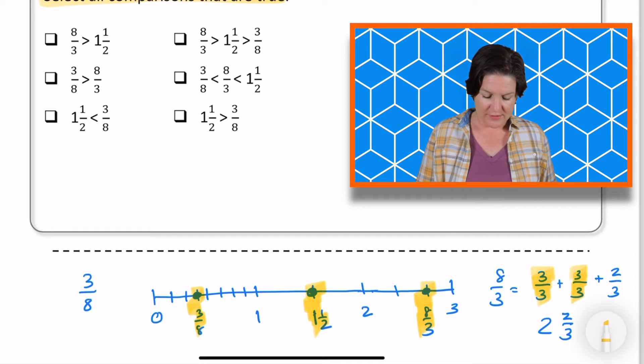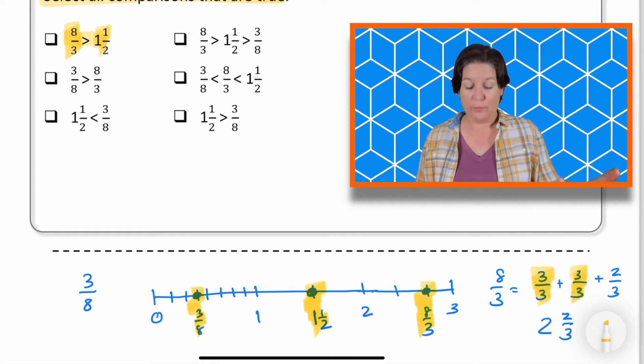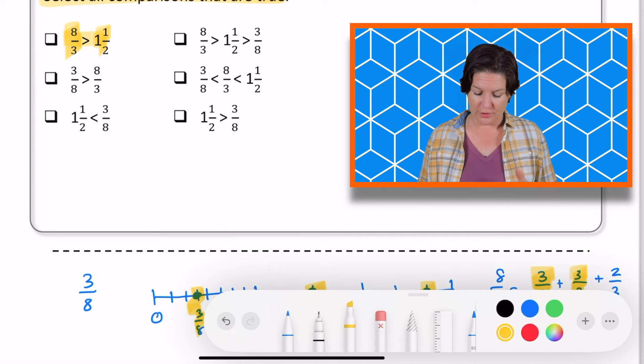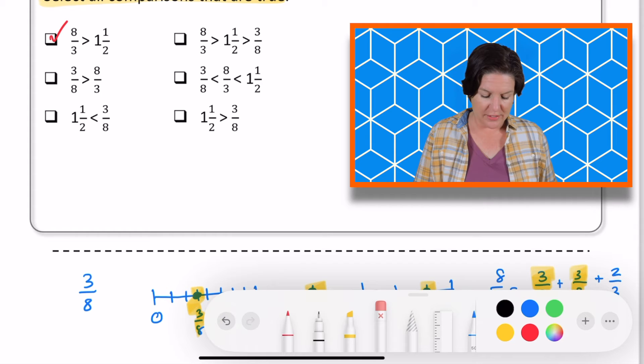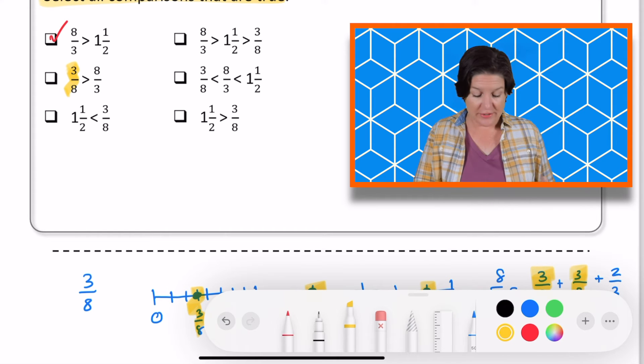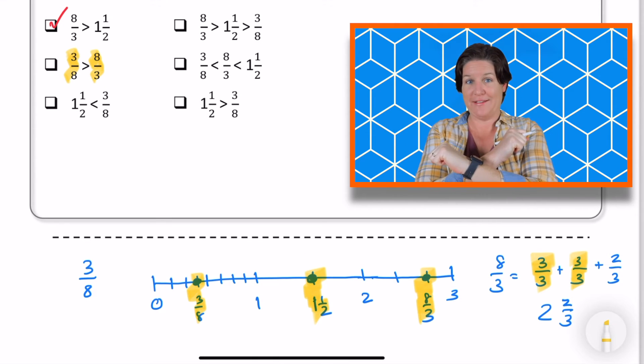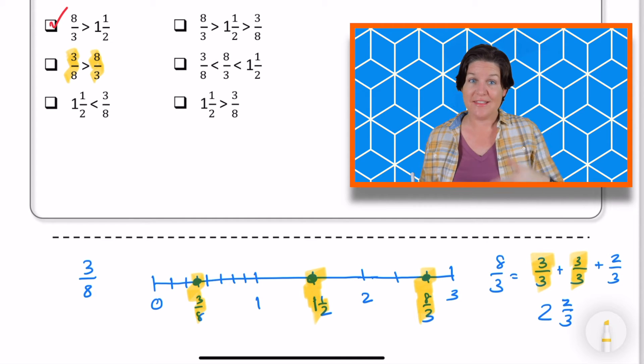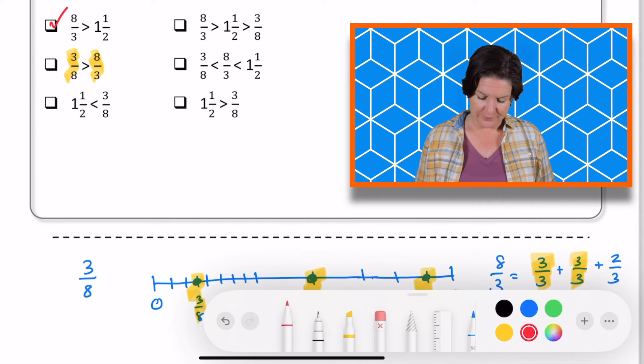Okay. So now I can see everything nice and clearly, which will make it so much more simple for me to go back and check each answer choice. So the first one says eight thirds is greater than one half. Well, according to my number line, that is true because eight thirds goes farther along. So I can mark that one as true. The next one says three eighths is greater than eight thirds. Should we keep that one or eliminate it? Let's eliminate that one because three eighths is way less. I can see that on my number line. So no, we're going to eliminate that one.